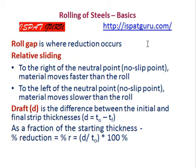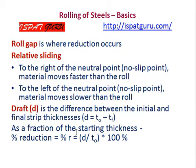Roll lap is where the reduction occurs. To the right of the neutral point (no-slip point), material moves faster than the rolls. To the left of the neutral point (no-slip point), material moves slower than the rolls. Draft is the distance difference between the initial and final strip thicknesses: d = t0 minus t1. As a fraction of the starting thickness, percent reduction r = (d / t0) × 100%.